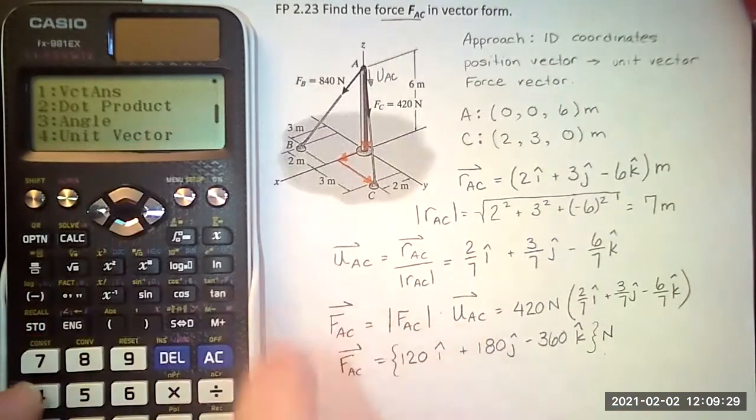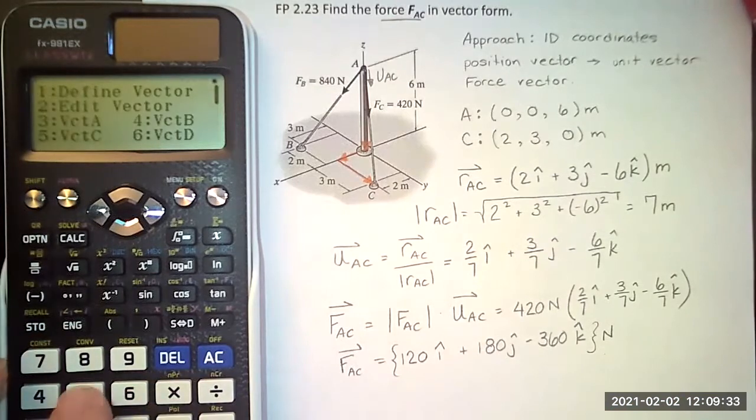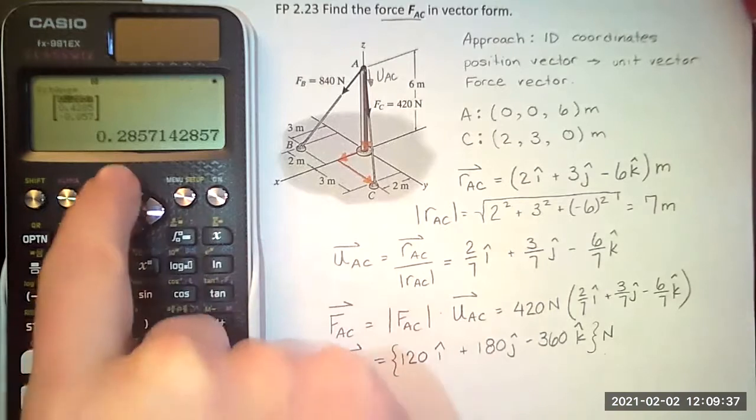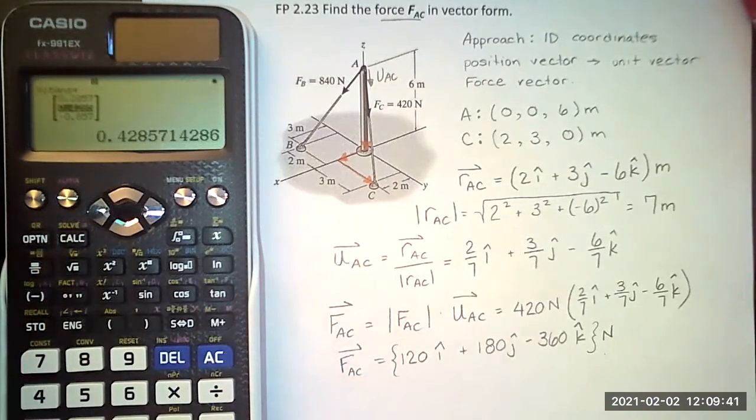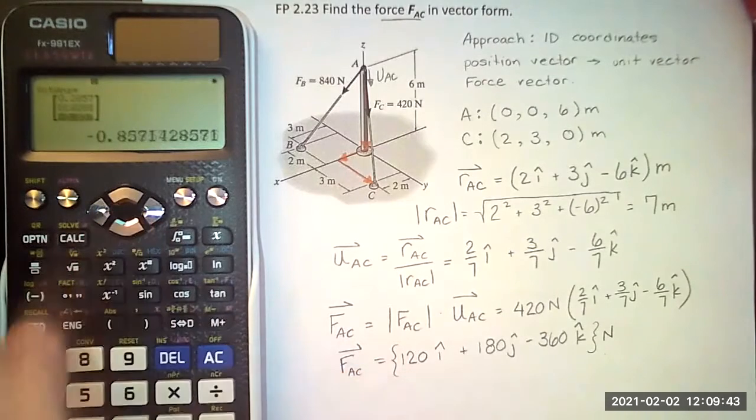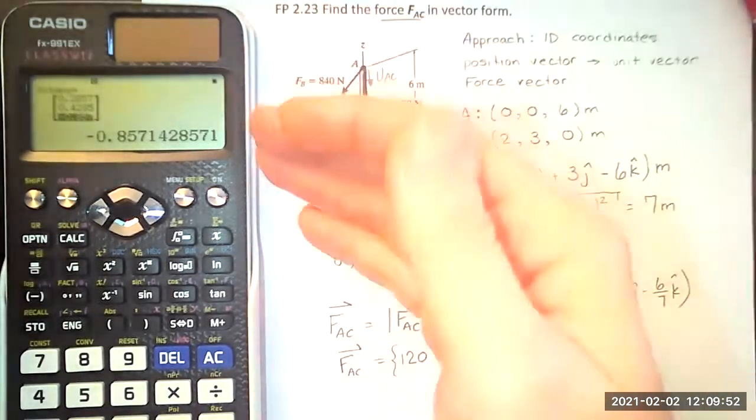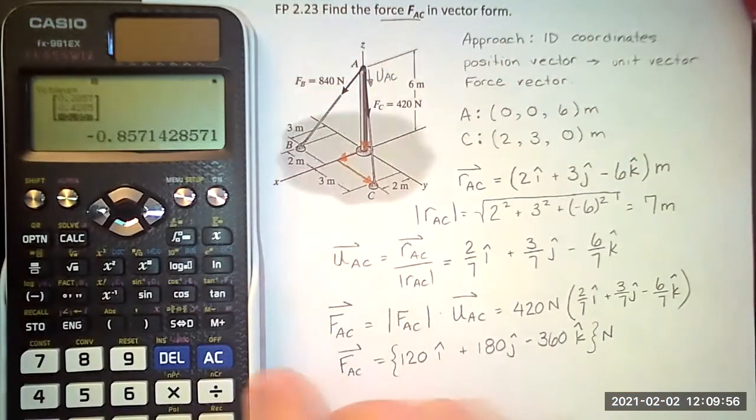and look at this unit vector built right in here. So the unit vector of vector C is 0.285X, 0.429Y, and negative 0.857Z. It doesn't show it as the 2 7ths, 3 7ths, 6 7ths, but we have all the values in there. So this is my unit vector. That's the vector answer.